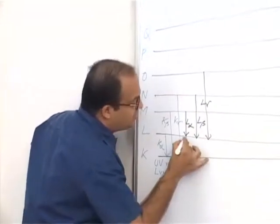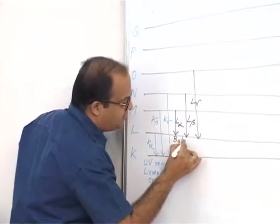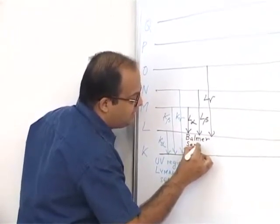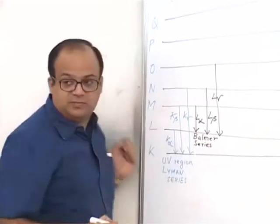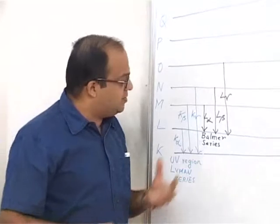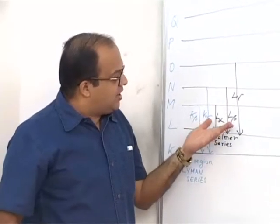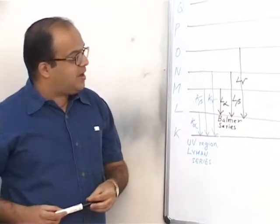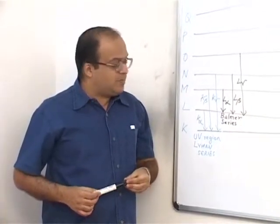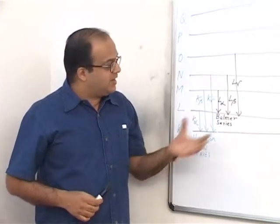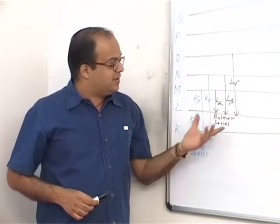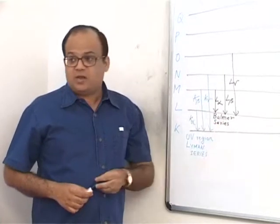These lines lie in the visible region and they are called the Balmer series, and that is why they are discovered first — because they are visible. Somebody had to experimentally observe the wavelengths of L alpha, L beta and L gamma lines and gave it to Balmer. Balmer was a mathematician and he gave a formula for calculating the wavelengths. In honor of him, this series is called the Balmer series.